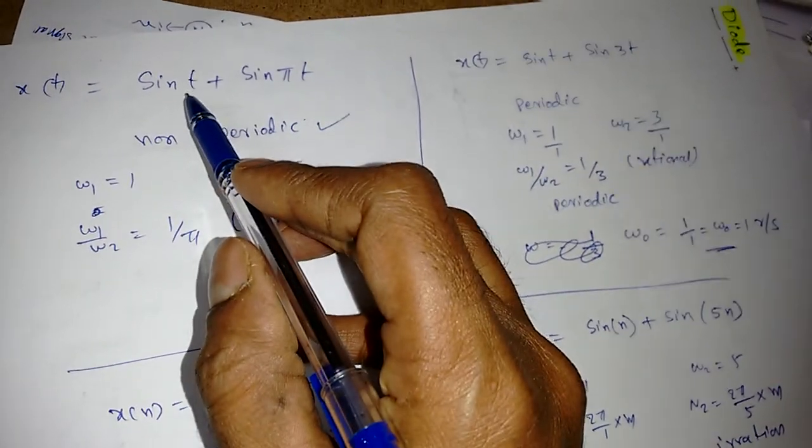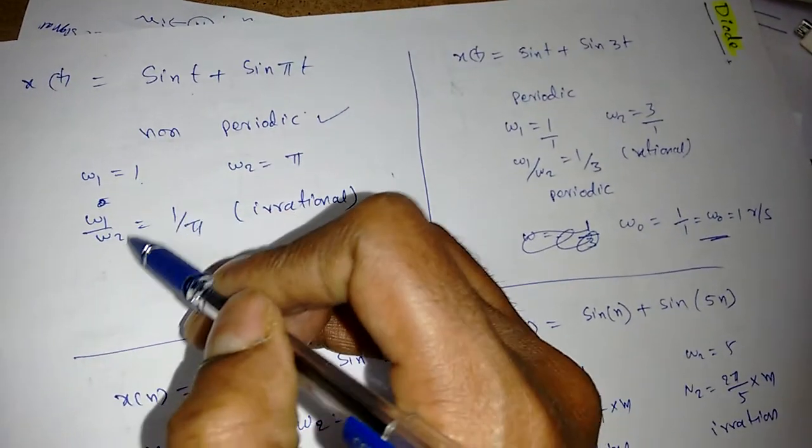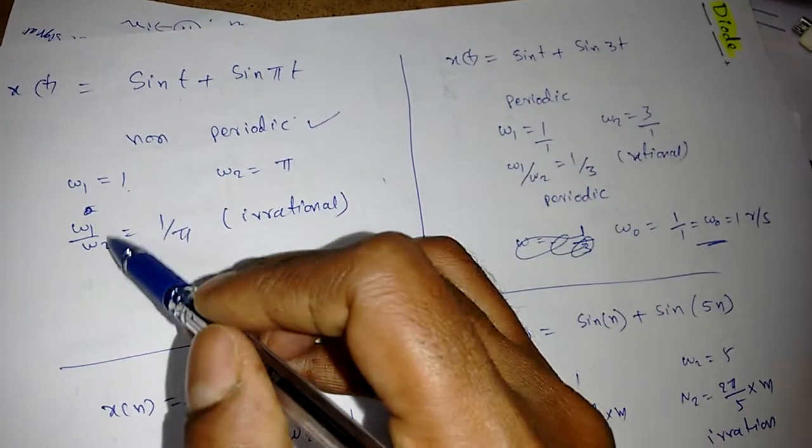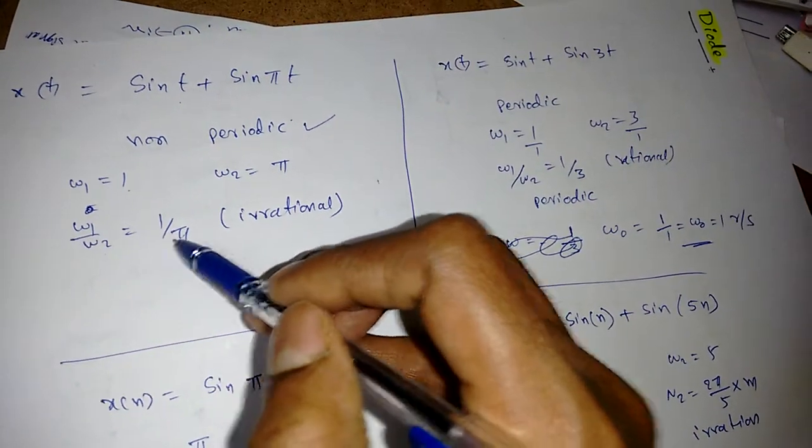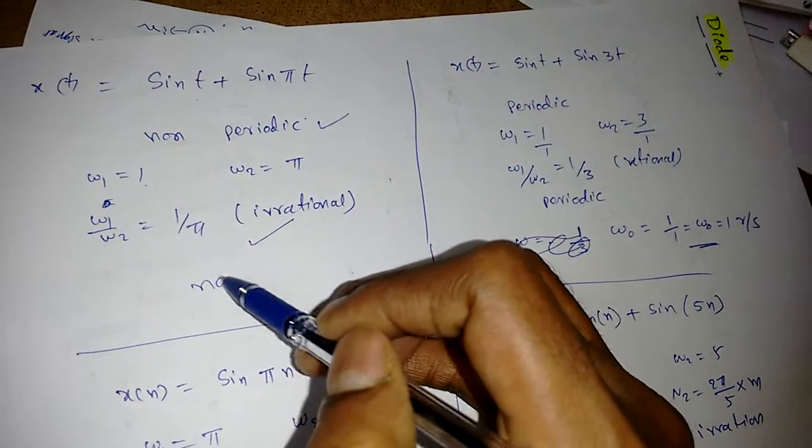For this signal omega 1 is equal to 1. So this signal omega 2 is pi. So if I use omega 1 by omega 2, 1 by pi, which is irrational, simply we can say not a periodic signal.